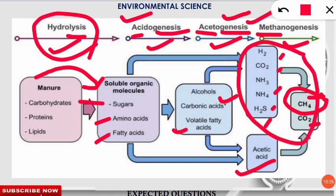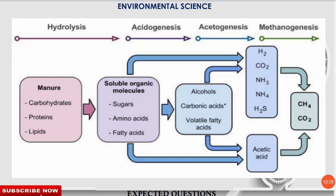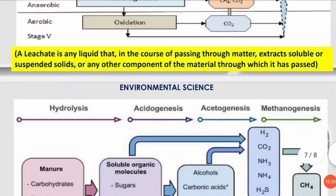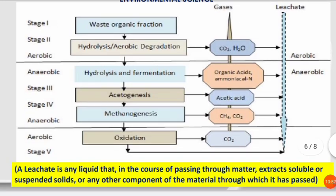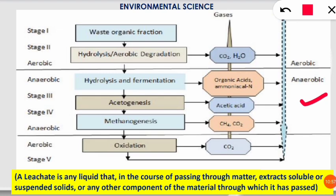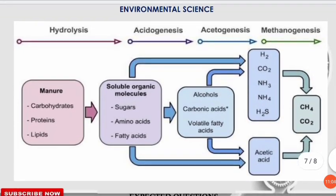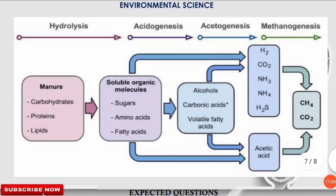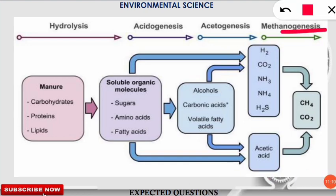These four anaerobic stages together comprise biogas. The most important component is methane, which is present in the maximum percentage, followed by carbon dioxide, then other gases such as ammonia, H₂S, and water vapor. The complete anaerobic process involves four steps: hydrolysis, acidogenesis, acetogenesis, and methanogenesis. The anaerobic stage specifically is responsible for producing methane, which is used as fuel.